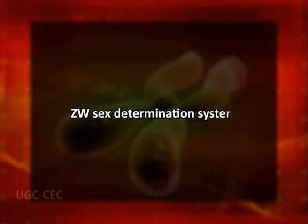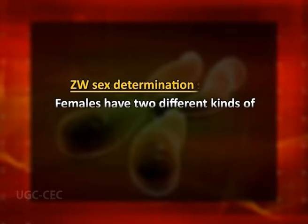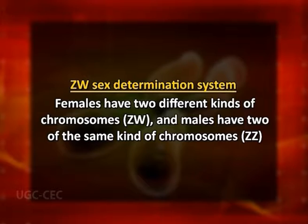Now, coming to the ZW sex determination system. The ZW sex determination system is found in birds, some reptiles and some insects and other organisms. The ZW sex determination system is reversed compared to the XY system — females have two different kinds of chromosomes, ZW, and males have two of the same kind of chromosomes, ZZ.